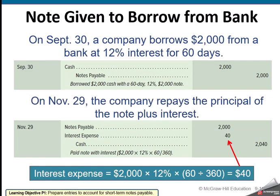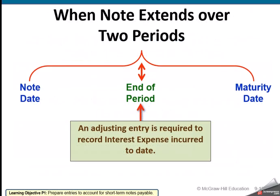If we borrow money from the bank and take out a note, the bank gives us cash and we incur the notes payable. When we pay it off, we credit cash, debit the notes payable, and charge interest expense. So a $2,000 note at 12% for 60 days divided by 360 gives us $40 in interest.